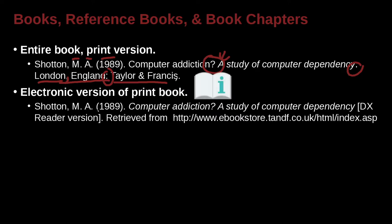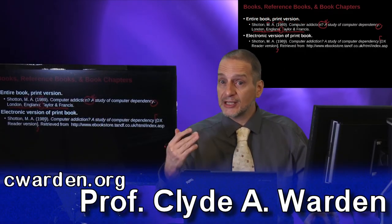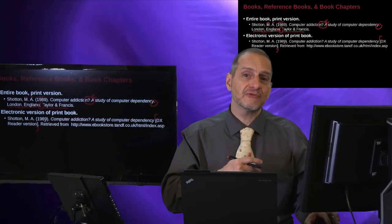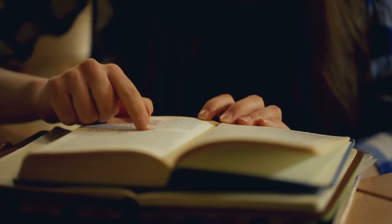What if this was an electronic version of this book? Then we would follow almost the same format, except at the end we would note the version — here this is the DX version. So we see an open bracket and a closed bracket. Those brackets are for special or extra information. You may say something like the Kindle version, or here the DX version, or this may be the web version — something special that doesn't fit with standard APA, but is helpful for the reader to see where this source came from.